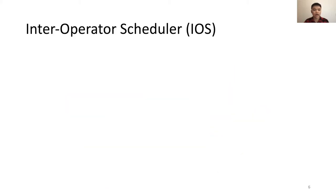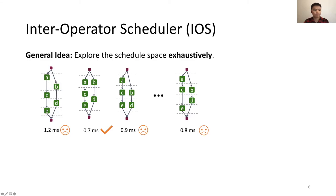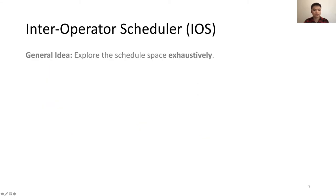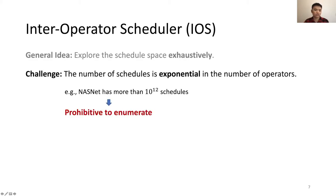The general idea of iOS is to explore the schedule space exhaustively — examining all schedules and finding the best one. However, the biggest challenge is that the number of potential schedules is exponential in the number of operators. For example, the NASNet model has more than 10^12 schedules, making it prohibitive to enumerate each one.